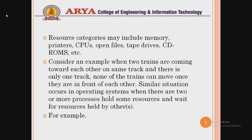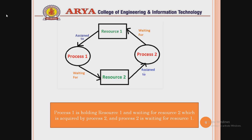Similarly, a deadlock condition arises in an operating system when two or more processes are holding resources such as printers or plotters and are waiting for other resources already held by others. A practical example is when a user is not able to move the mouse or the keyboard is not responding — that condition is known as deadlock.